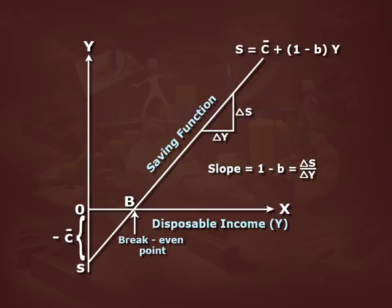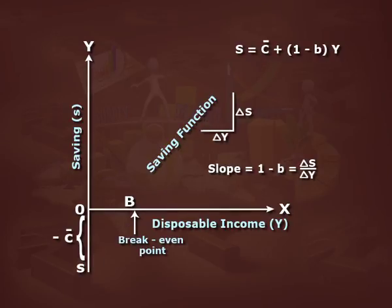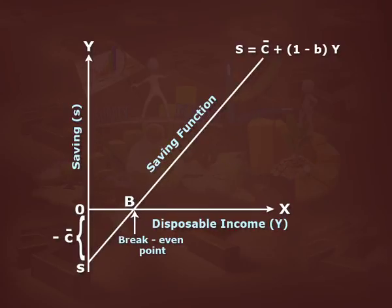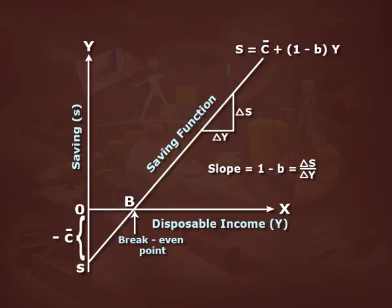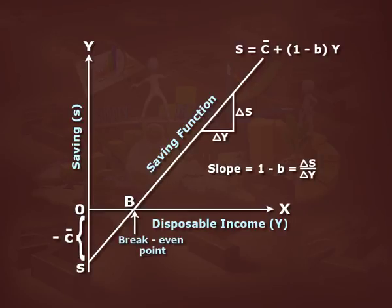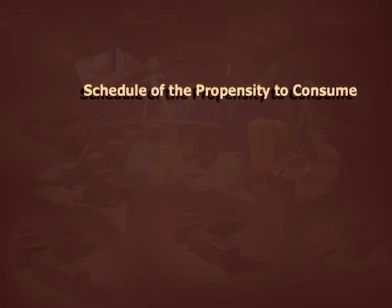In the figure, the Y-axis represents saving while the X-axis represents disposable income. The SS line is the saving function, which is negatively sloping, where the slope is 1 minus B, equal to the change in S by change in Y. Point B represents the breakeven point. The line is linear because MPS is constant.